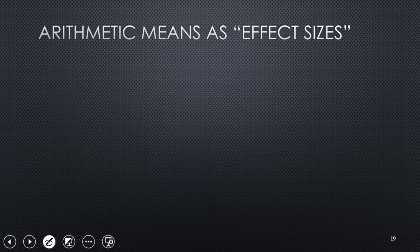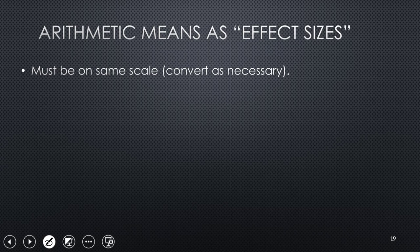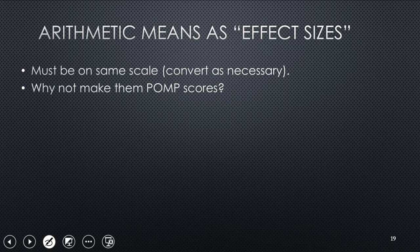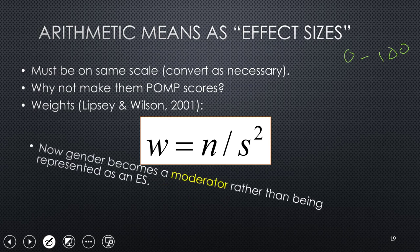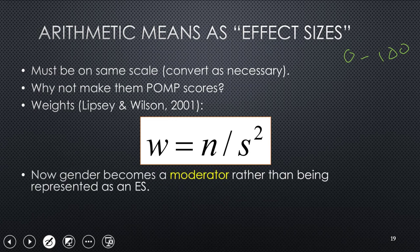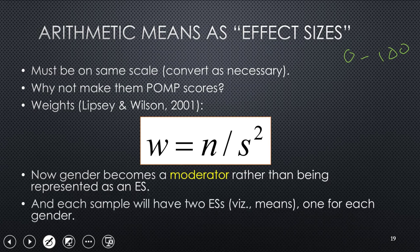So let's talk about arithmetic means as effect sizes. You've got to have each study on the same scale. So you make conversions as necessary. And I would argue, why not make them POMP scores? Because those have implicit meaning. Zero to 100. The example I'll give you today I did before I got wise to POMP scores. So they're going to be on the original SDO metric, which I believe is a five-point scale. You calculate weights for them. It's just sample size divided by the variance for each study.